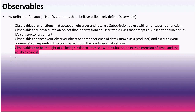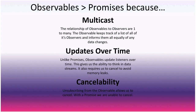Observables can be thought of as similar to promises but with multicast. The relationship of an observable to its observers is one to many — the observable keeps track of all its observers and informs them equally of data changes. No matter where you subscribe, every observer gets the exact same information, which you can then manipulate with operators.